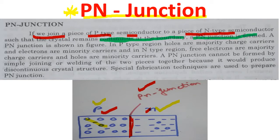A P-N junction is shown in the figure. In the P-type region, holes are majority charge carriers — you can see holes are in majority here, and a few electrons are also present in P-type. While in N-type, electrons are majority charge carriers — you can see electrons are in majority, and a few holes are also present there.